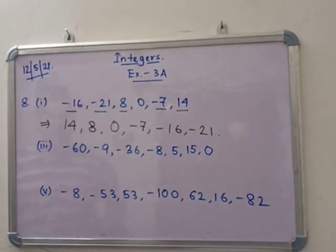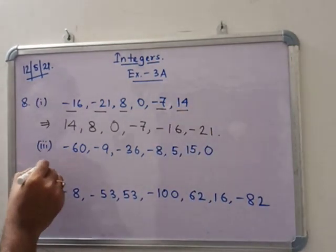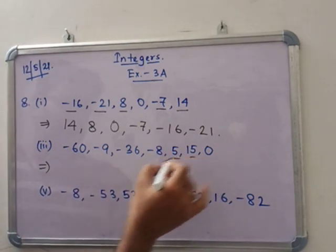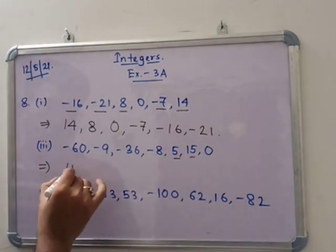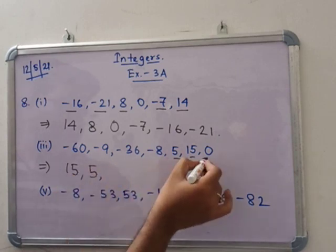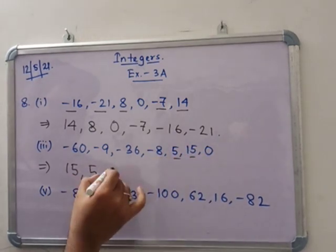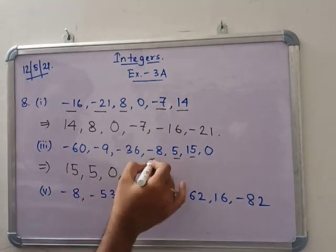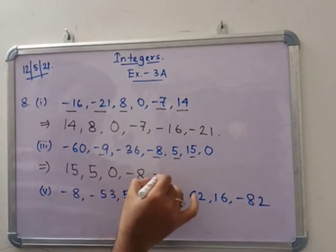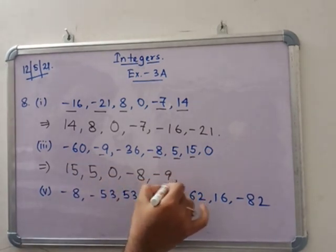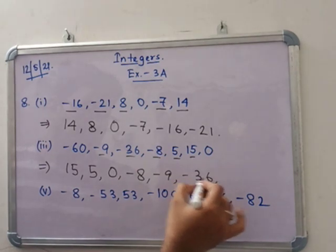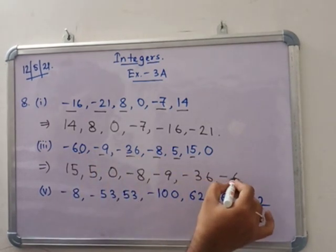Similarly for the next one, choose the positive numbers first: 5 and 15. So write 15, then 5, then 0. Then the negative integers: minus 8, minus 9, minus 56, and minus 16.